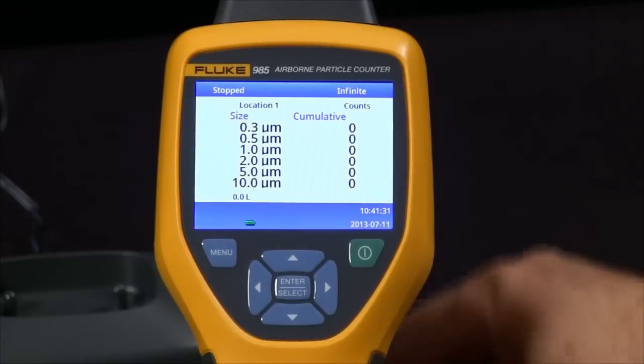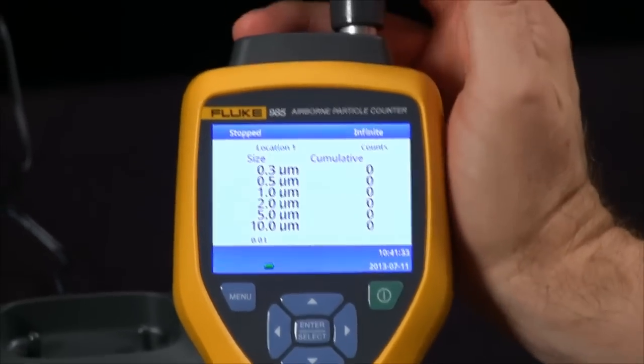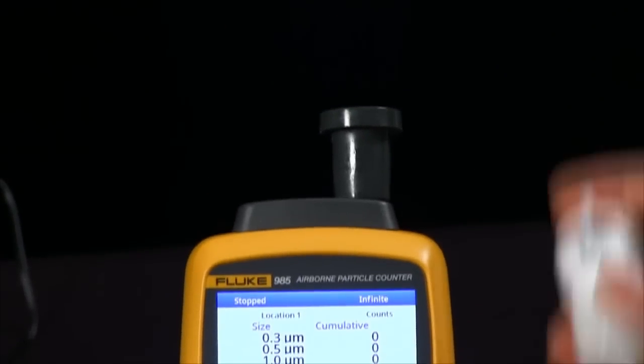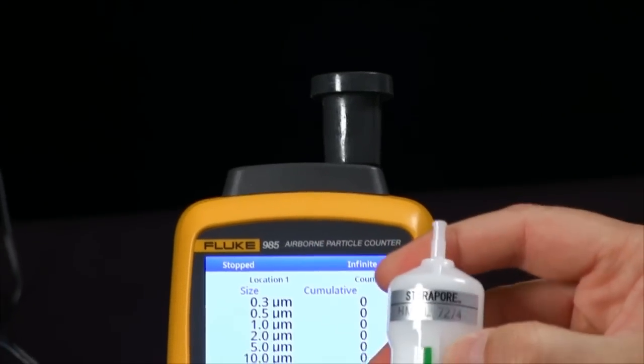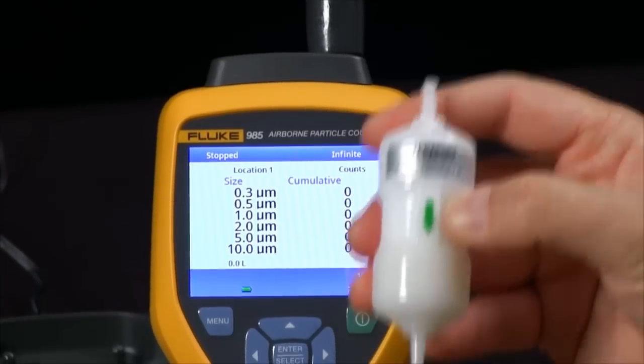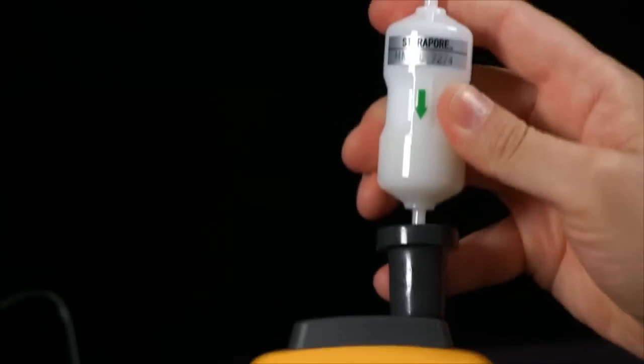To establish a baseline, we provide an adapter which goes over the sample port and a zero pass filter. You will see the direction of airflow is indicated by the green arrow. Simply insert this into the adapter.